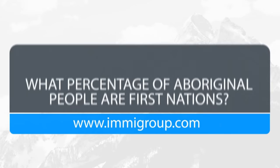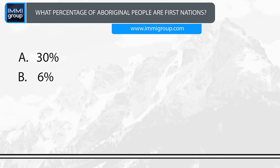What percentage of Aboriginal people are First Nations? A. 30%. B. 6%. C. 50%. D. 65%. Answer: 65%.